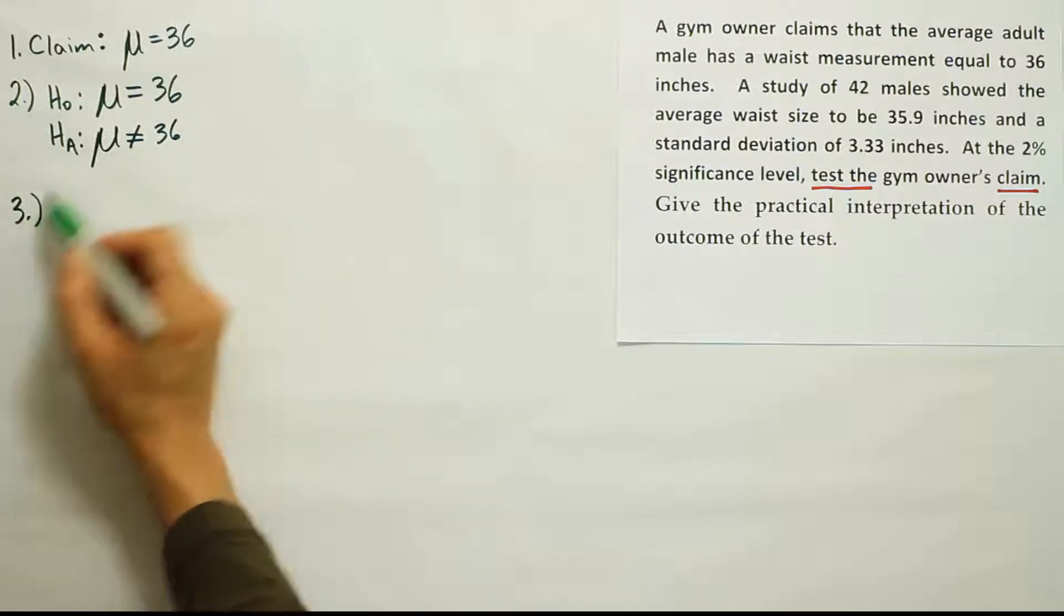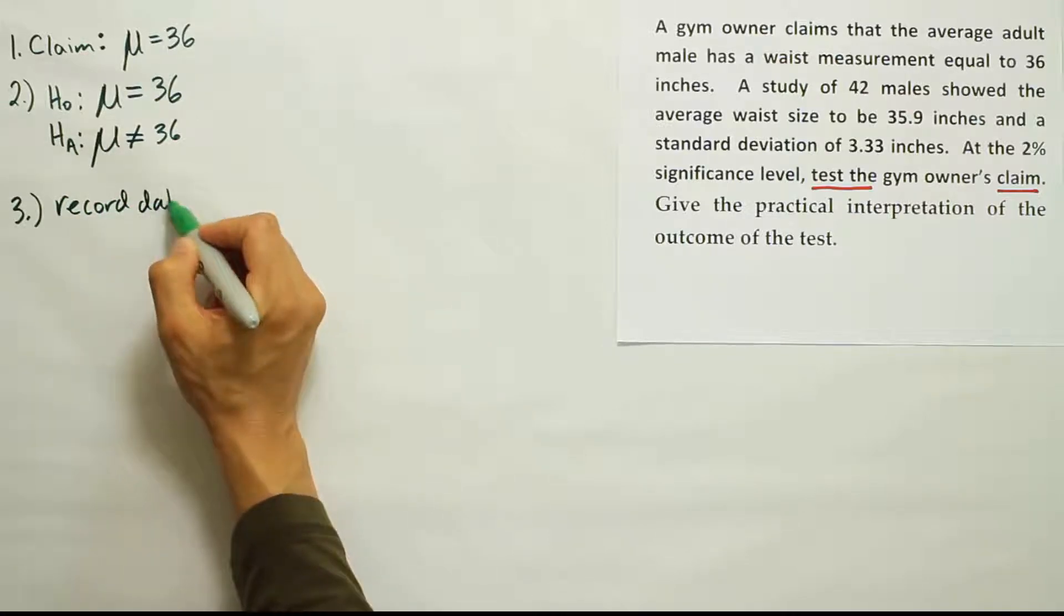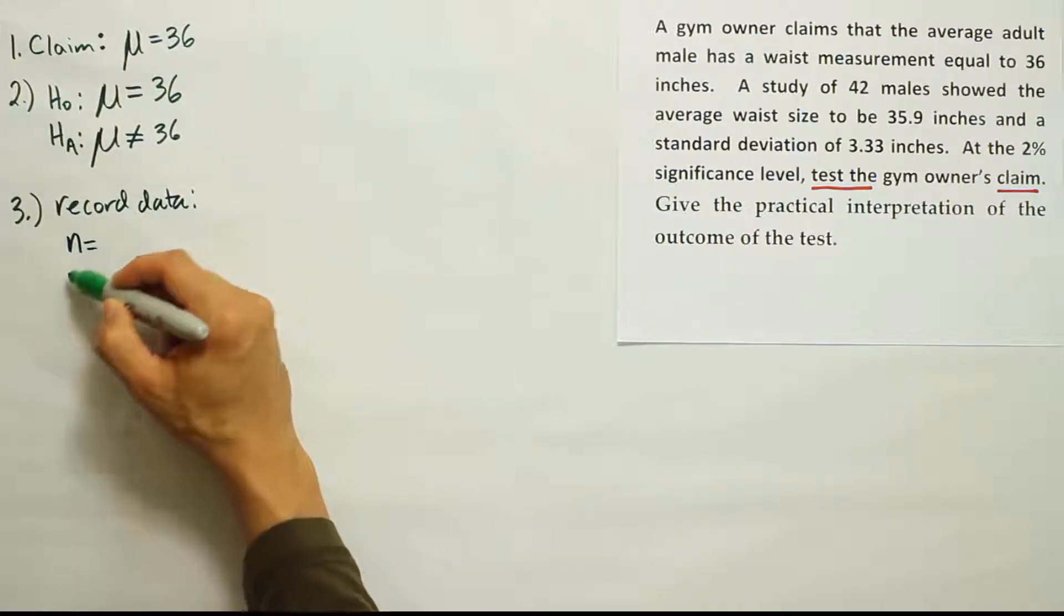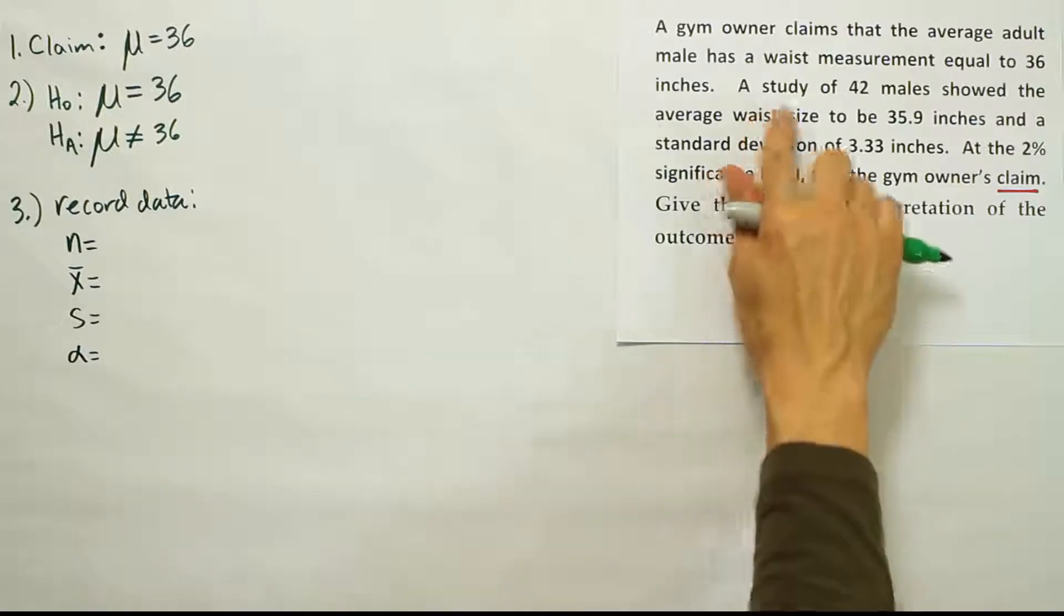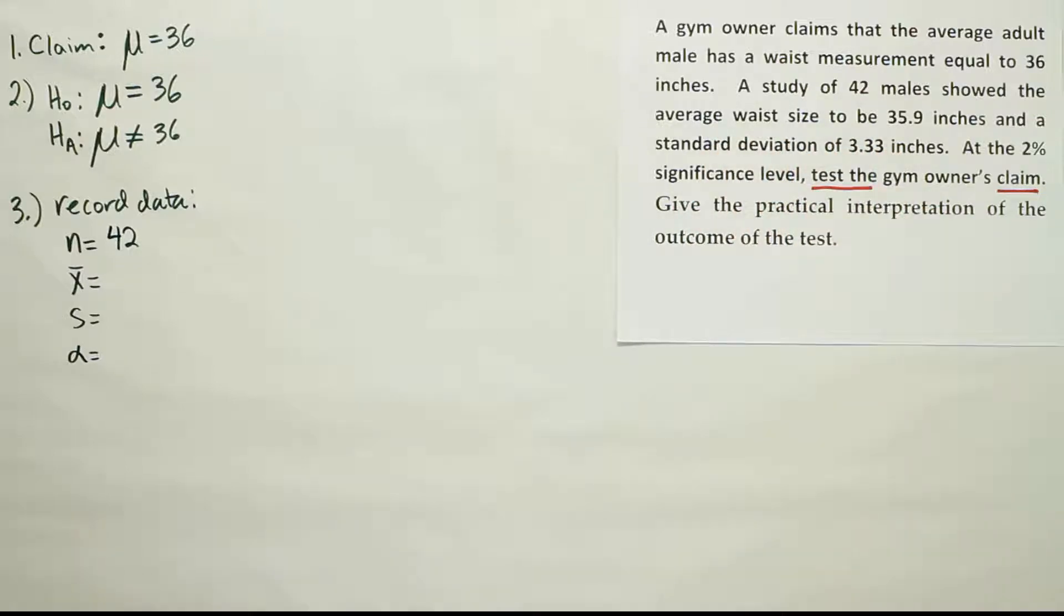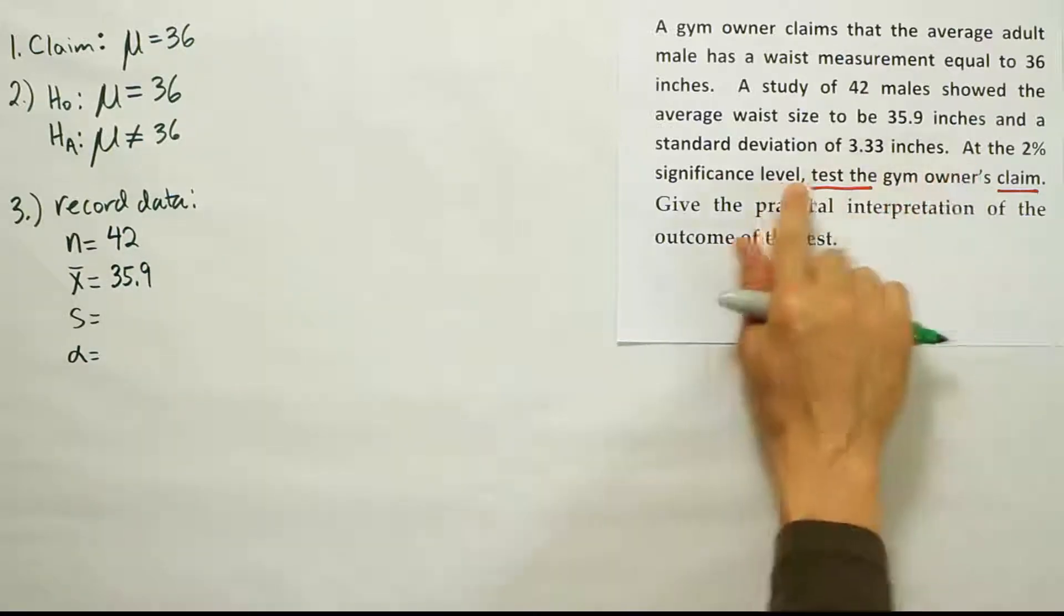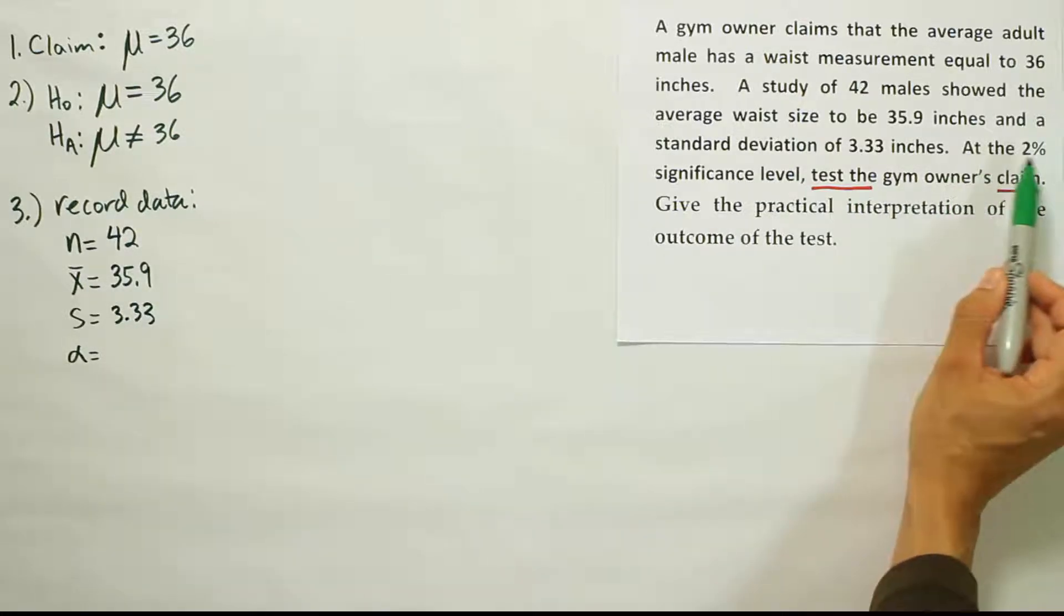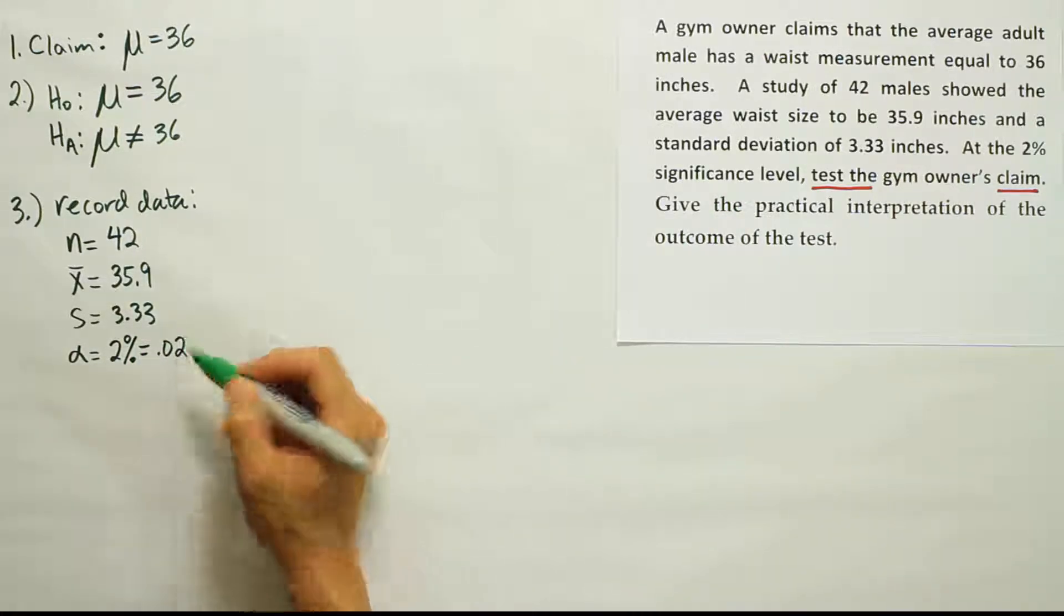Alright, let's go to step three then. We have our competing pair of hypotheses, we have our claim, now it's time to get our data. So we want to record our data. Okay, so the data here for a hypothesis test about the mean is usually N, X bar, a standard deviation, and a significance level alpha. Okay, so it says a study of 42 males. So, N is 42. Show the average waist size to be 35.9. So, the average was 35.9. And a standard deviation of 3.33. The significance level alpha, it says at the 2% significance level, so that's 2%. Or, in other words, 0.02.